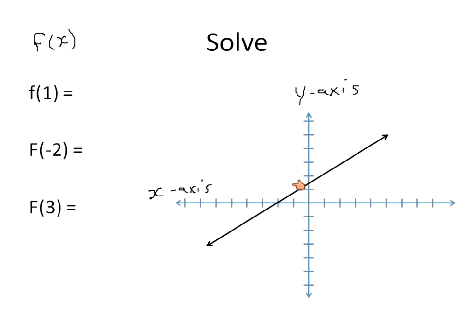So the x value of 1, when x is equal to 1, what is my output? What's my y value? Or where is this graph? My x value is 1. I'm going to go up and it's about 2. So when the function, when x is equal to 1, my output is equal to 2. When x is equal to negative 2, my output is 0. And when x is equal to 3, my output is approximately there, which is 3 and a half.